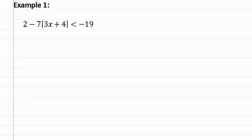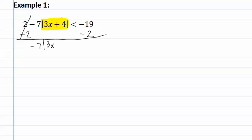Here is example one. As you can see, the absolute value is not isolated — there are things with it. We must isolate it before we can evaluate whether this is a less than or greater than statement and then be able to solve it. We begin isolating it just like a normal equation by doing subtraction first. This gives us negative seven times the absolute value of 3x plus four, less than negative twenty-one. I cannot distribute the negative seven through because you cannot distribute into an absolute value.